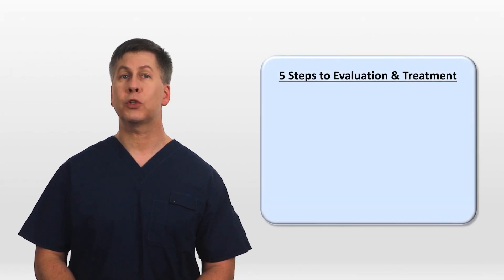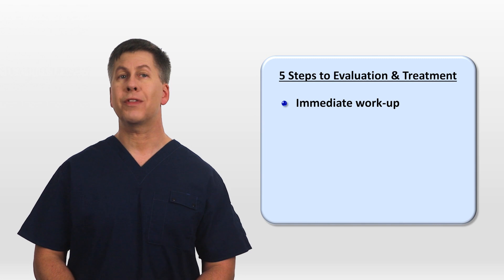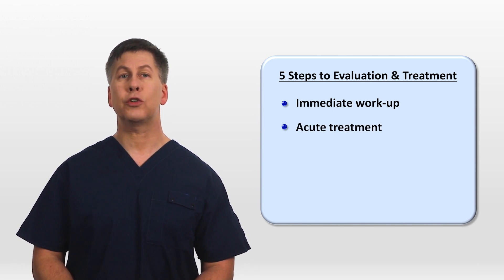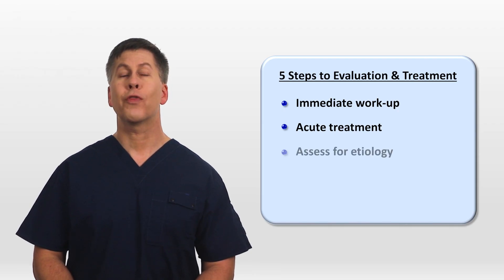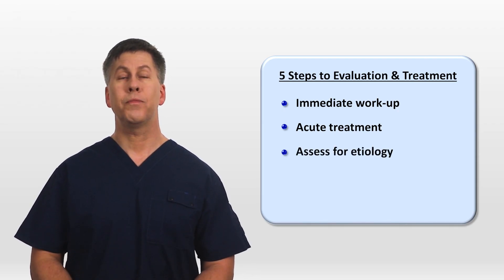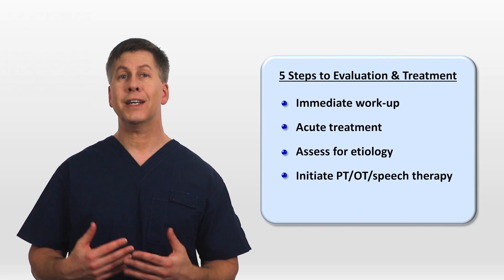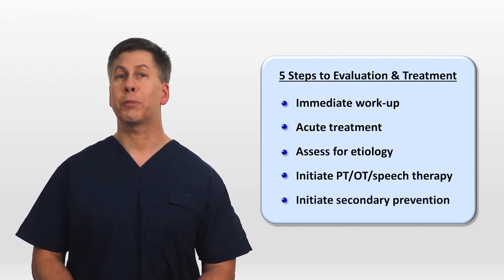Once you've identified a possible stroke, there are five steps to evaluation and treatment: the immediate workup, to be completed within the first hour of arrival to the hospital; the acute treatment, referring mainly to reperfusion and blood pressure control; then assessment of the etiology; initiation of physical, occupational, and speech therapy; and last, to assess modifiable risk factors and initiate secondary prevention.